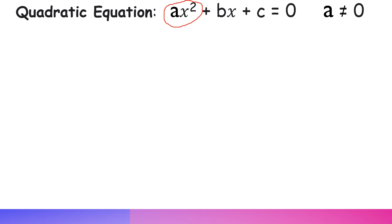Looking at this quadratic equation, we have the ax squared term which is the quadratic term, the bx term which is the linear term, and c which is the constant term. The coefficient of x squared — that is, whatever is multiplying x squared — is a. And b multiplies x, so that's the coefficient of x, and c is the constant.